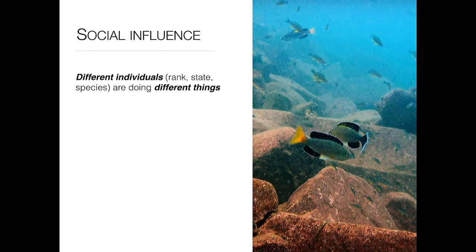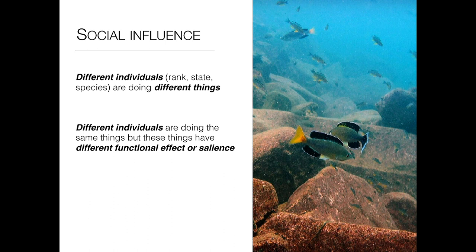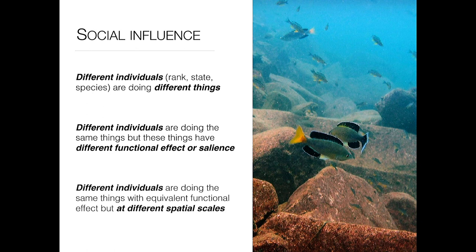First, different individuals within groups may be doing fundamentally different things — the behaviors themselves are different, so their effect on the collective differs. Alternatively, different individuals may be doing the same things in the sense that the kinematic signature of behavior is conserved, but these have a different functional effect in the network, or different salience. Or different individuals are doing exactly the same things with equivalent functional effects, but they operate on different spatial scales, manifesting in different emergent or collective outcomes.